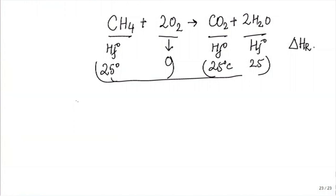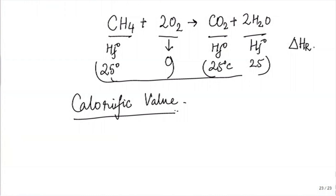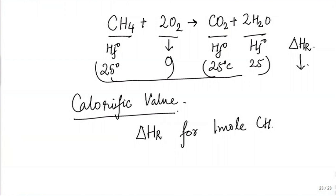Now, once you have a fuel there is something called a calorific value. It is just going to be the negative of the heat of reaction, expressed per kg or per mole. For example, if I use this reaction and get delta HR, it would be for 1 mole of CH4 burning — delta HR is negative because it is an exothermic reaction. But we express calorific value as the positive quantity: minus delta HR is the CV for 1 mole of CH4.